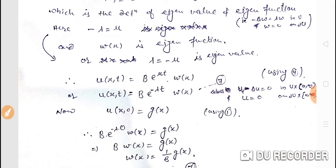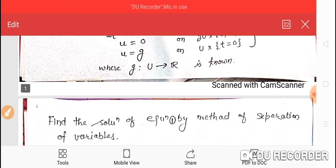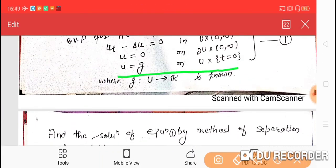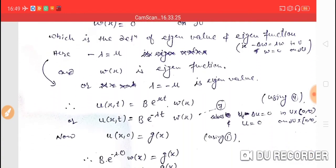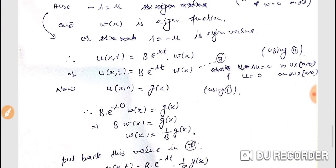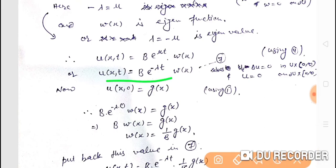We use the initial condition from the statement: u(x,0) equals g(x). In our solution u(x,t), putting t equals zero, we get u(x,0) equals b times w(x) equals g(x). Therefore, w(x) equals (1/b) times g(x).